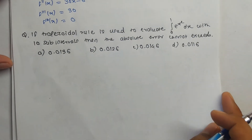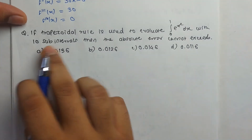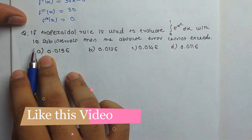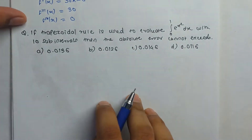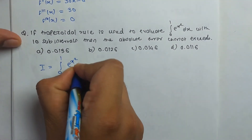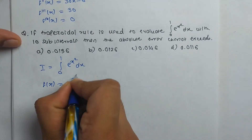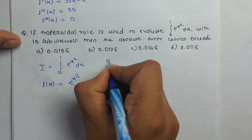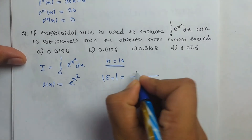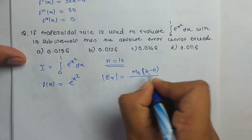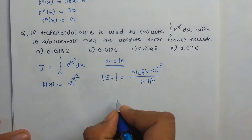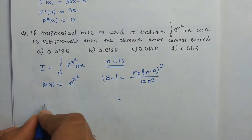Problem 2: If the trapezoidal rule is used to evaluate ∫₀¹ e^(x²) dx with 10 sub-intervals, the absolute error cannot exceed — find the error. So our f(x) = e^(x²), n = 10. The formula for the error of the trapezoidal rule is: M2 × (b − a)³ / (12n²). We need to find M2, the second derivative of f(x).